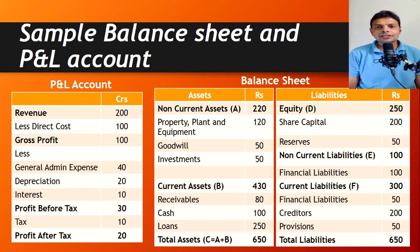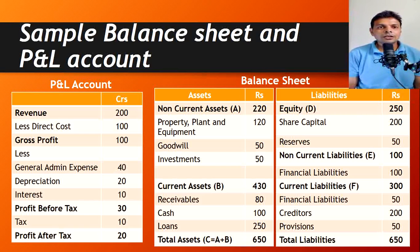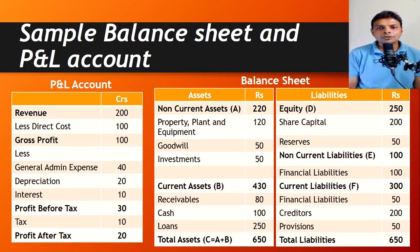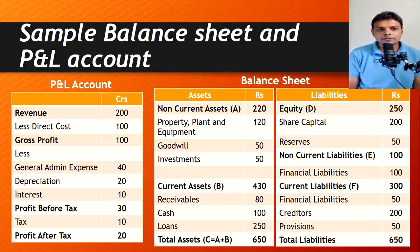We will take a sample balance sheet and a profit and loss account to look at what these four ratios are. A typical P&L starts with revenue — in this example, revenue is 200 crores. Then gross profit, which is revenue minus all direct expenses like direct labor and direct material. Then admin expenses, depreciation, and interest expenses leave us with a profit before tax of 30 crores.